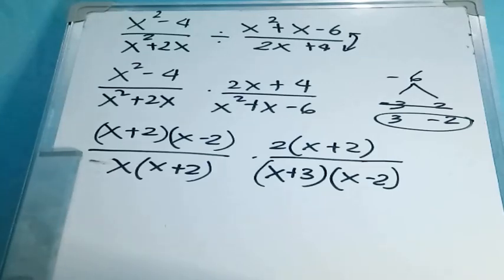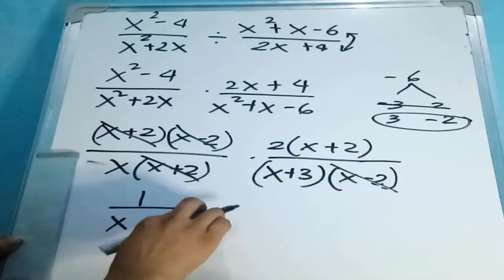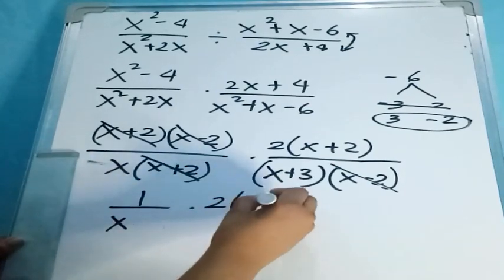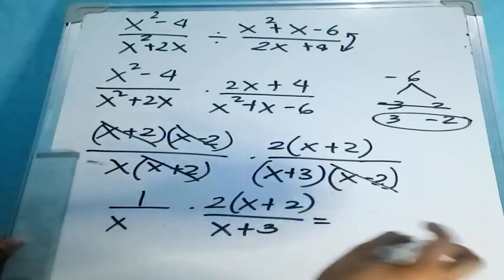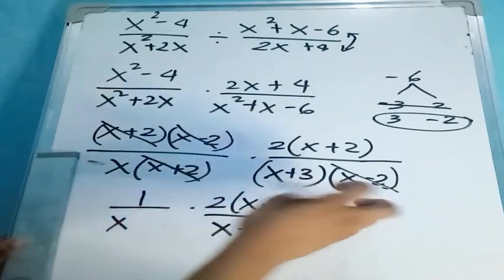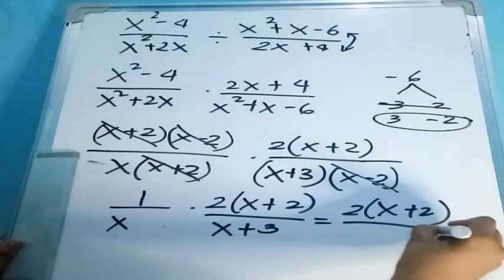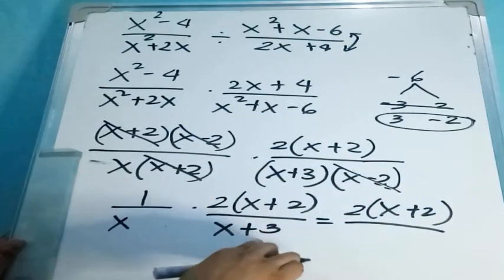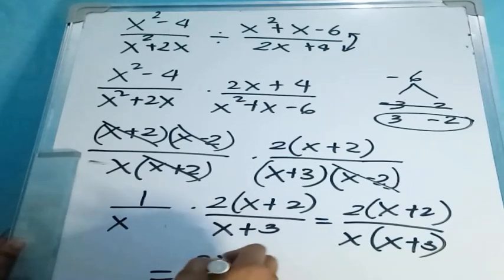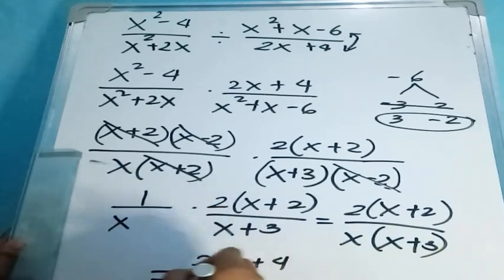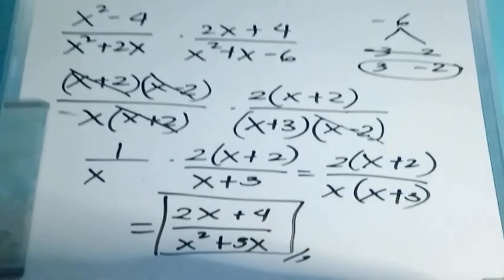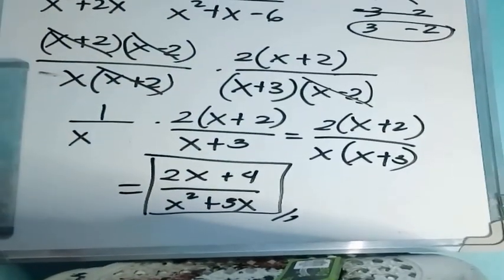After cancellation, we have (x plus 2) and other common factors cancelled. The remaining expression gives us 1 over x times 2 times (x plus 2) over x. Multiplying the remaining factors, we get 2 over x times (x plus 2). So, the final answer is (2x plus 4) over (x squared plus 3x).